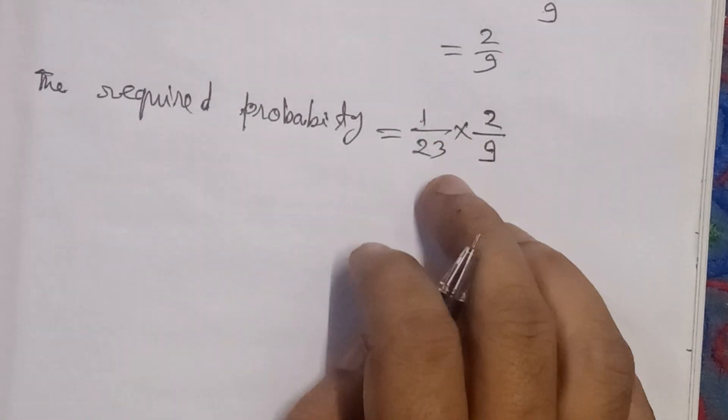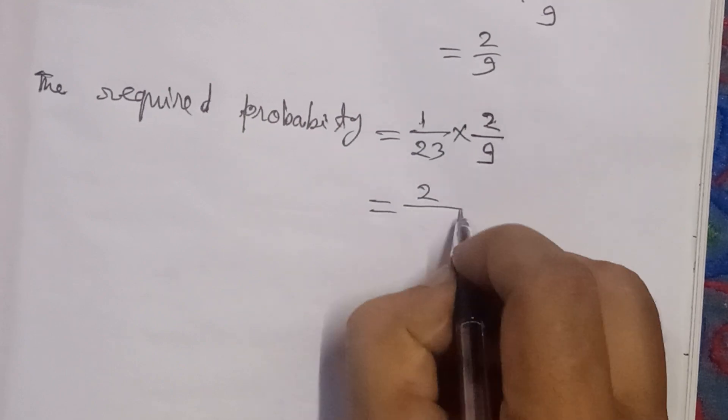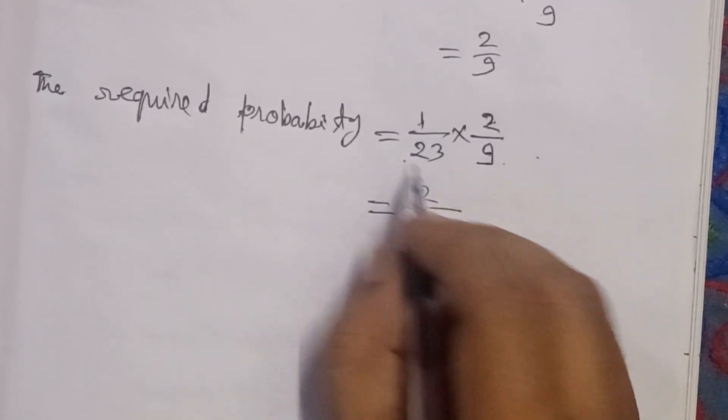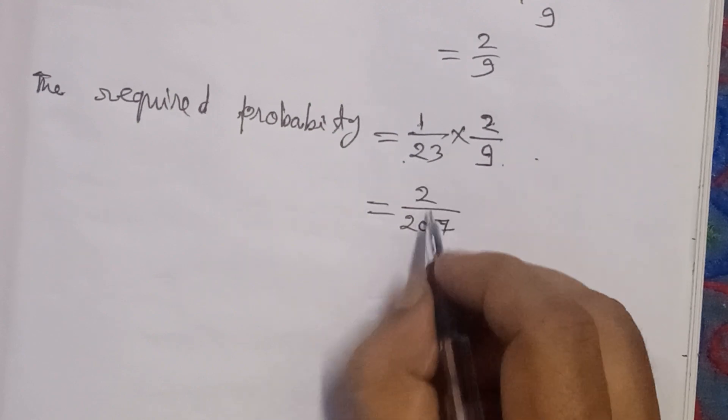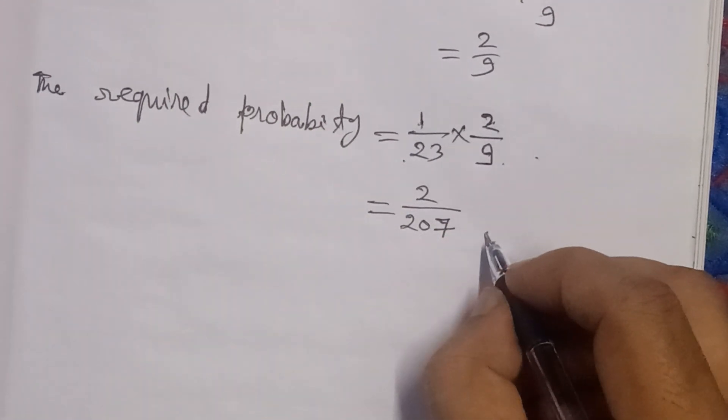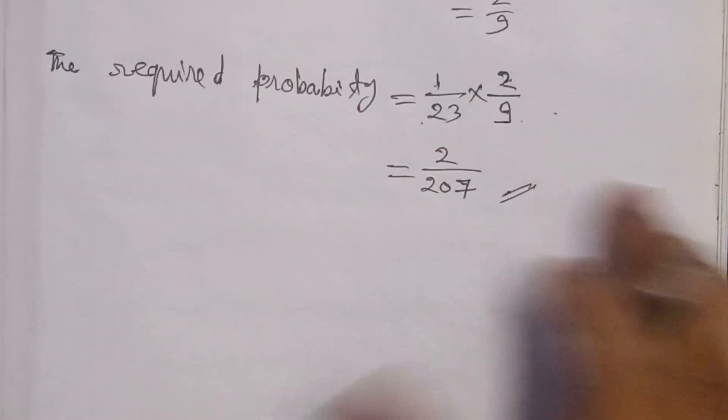For dependent events, we use the multiplication rule of probability. In this case, multiply the numerators together and denominators together. So 2 times 2 is 4, and 23 times 9 is 207. The answer is 2/207.